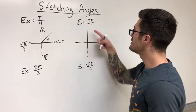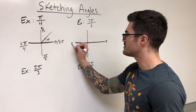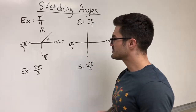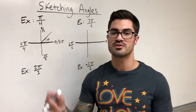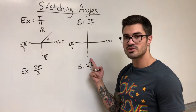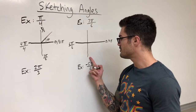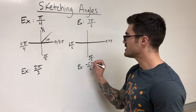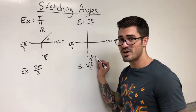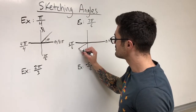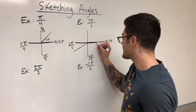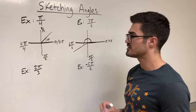Next example: seven pi over six. I draw my y-axis and x-axis, going from zero to pi to two pi. I can write pi as six pi over six, and three pi over two as nine pi over six. So we can clearly see that seven pi over six is in the third quadrant — it's closer to six pi over six than to nine pi over six. The terminal side goes in here, with the initial side always starting on the positive x-axis.